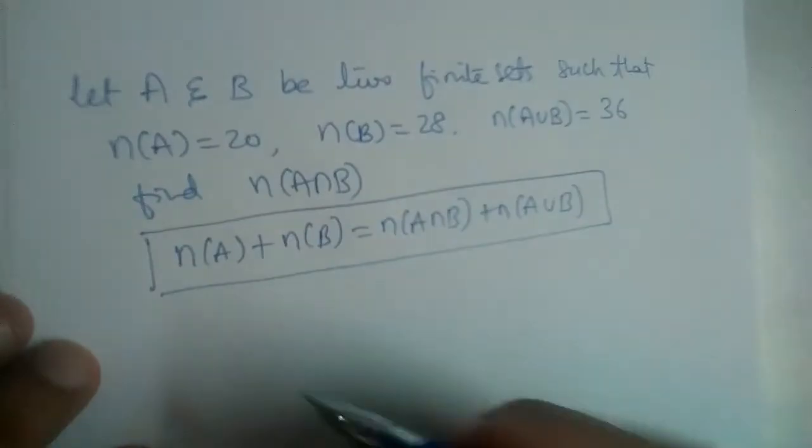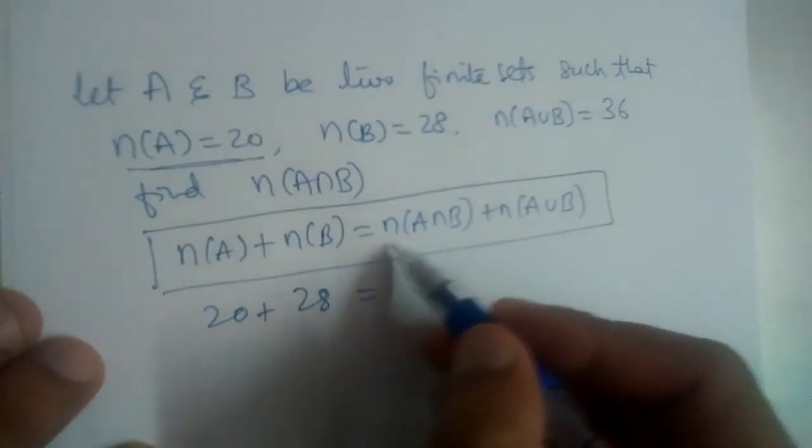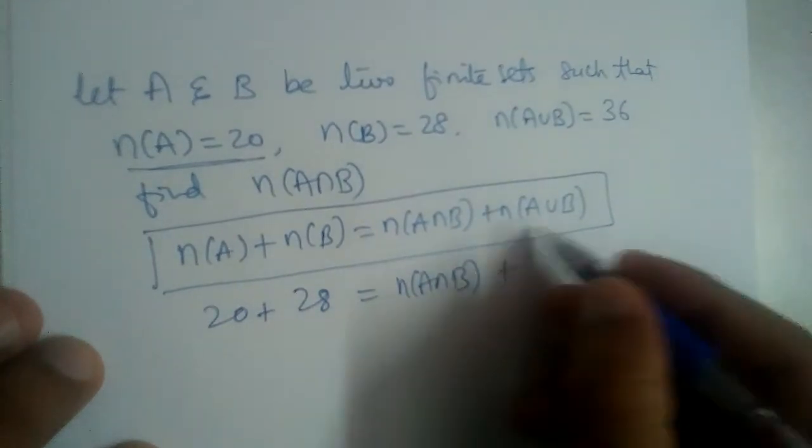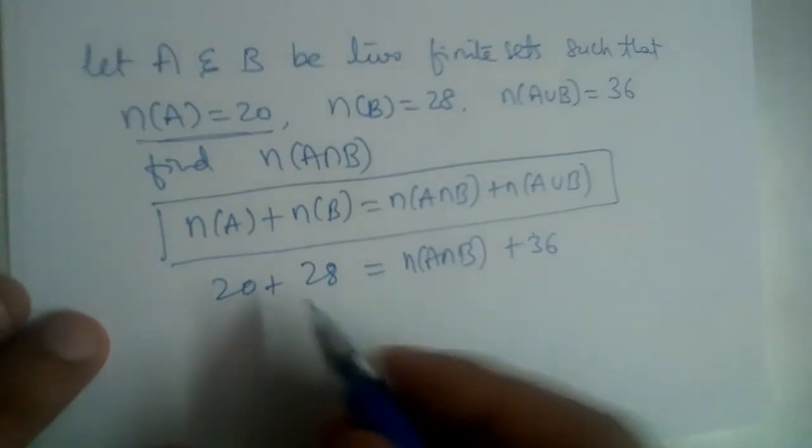So let us substitute the values. n(A) is 20 given, n(B) is 28 given, and n(A intersection B) we need to find. Plus n(A union B) is 36 given. So this...